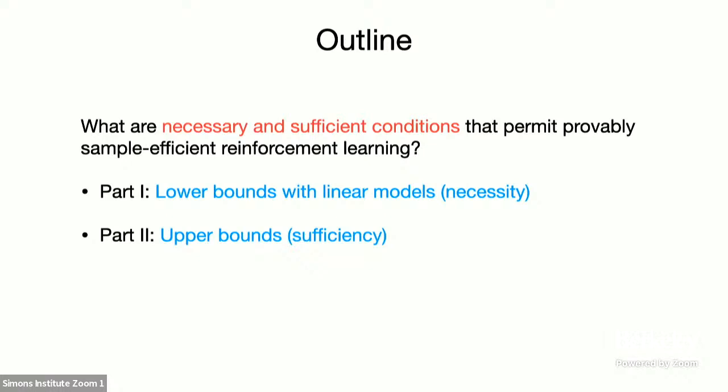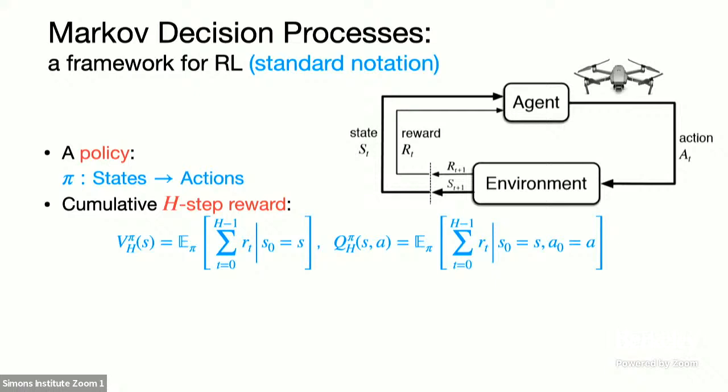The notation we'll use is somewhat standard in RL. In this MDP setting, an agent takes an action A that advances the state — the next state is sampled from some underlying stochastic process. A policy is some behavioral mapping which maps states to actions. We'll refer to two quantities: the value function and the Q function. The value function at a state S when we execute policy pi is our future reward for capital H steps starting at state S. The Q function is a one-step look-ahead: we start at state S, take action A, then follow pi, giving the expected future reward from that configuration.